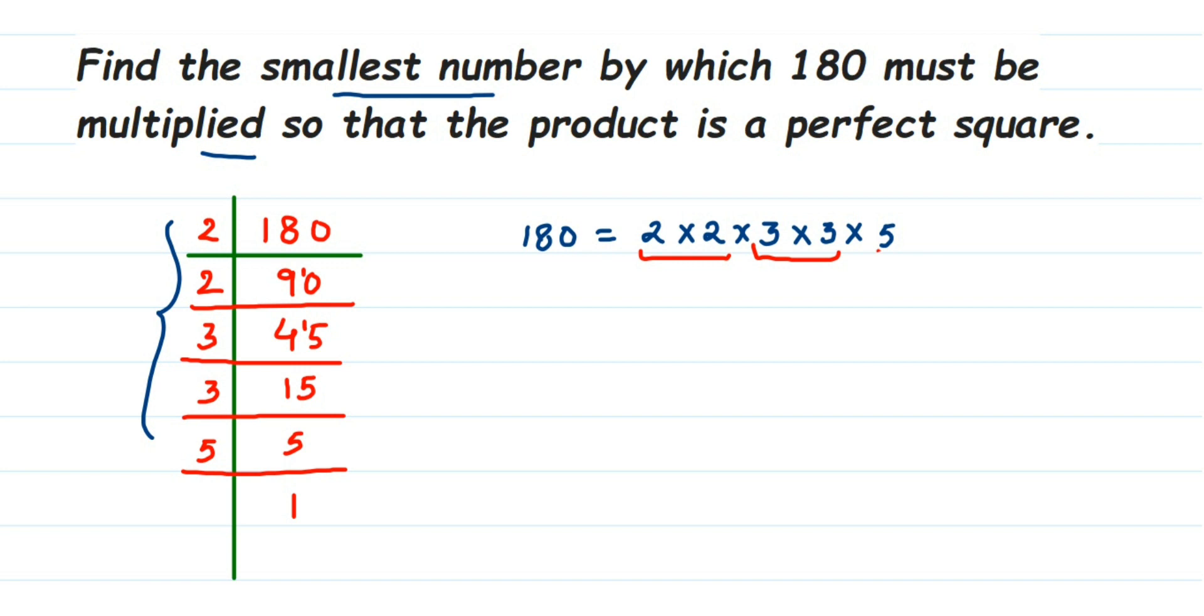So we're going to conclude the answer. Therefore, 5 is the smallest number to be multiplied.